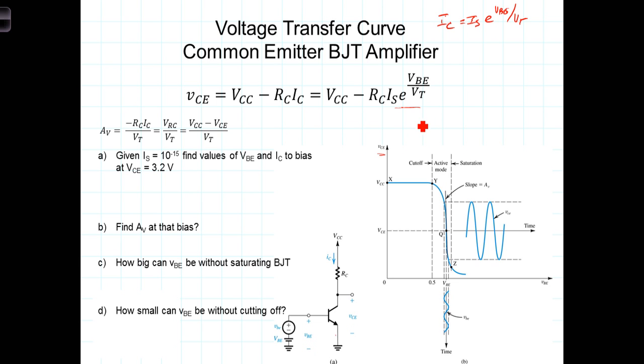The task for the engineer designing the amplifier is to identify some mid-range point, some point mid-range along this relatively linear part of the voltage transfer curve. We nominally think about it as being between the active mode, where it goes from cutoff into the active mode, to where it then leaves the active mode and goes into the saturation mode.